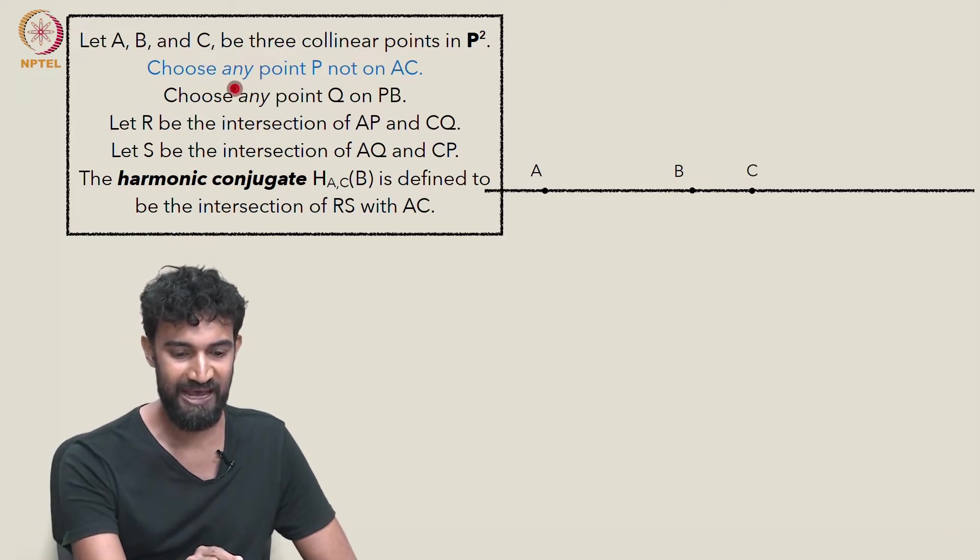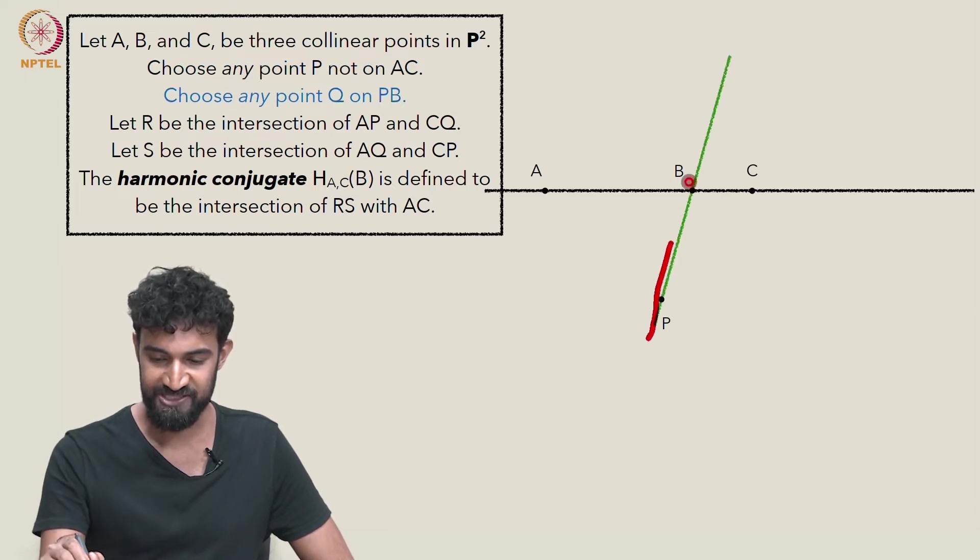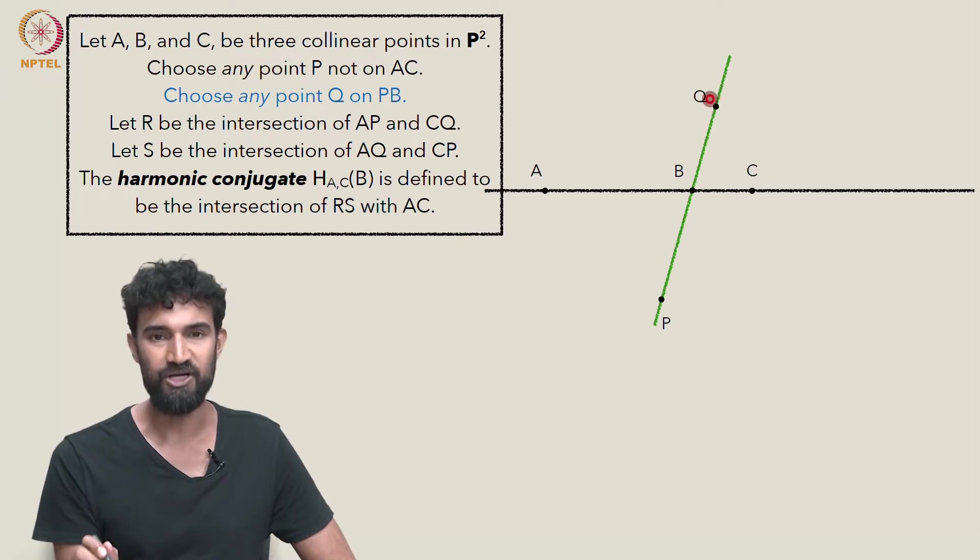So let's choose any point P, not on AC, like this one here. But now let's choose a point and let's connect P to B. Earlier, we only chose points Q on the same side of this line as P. But let's choose a point Q here.